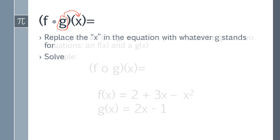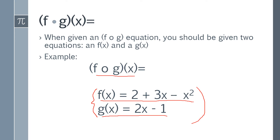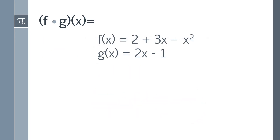So here's what f of g of x looks like. When you're asked to solve these problems, you're given two equations. Here is the f of x equation: 2 plus 3x minus x squared in this case — this is just an example. And here's the g equation: g of x is 2x minus 1. You're given the f of x function and the g of x function, and it asks you to solve for f of g of x.